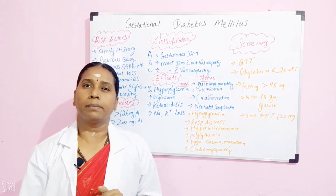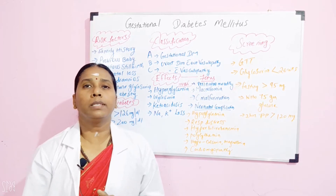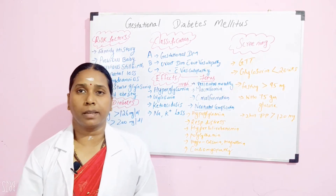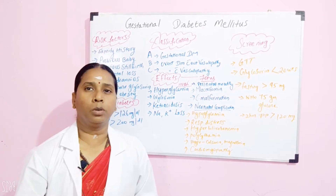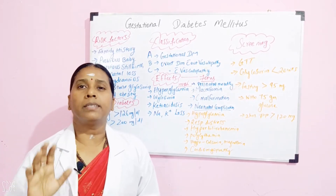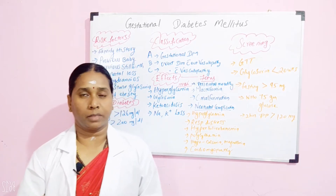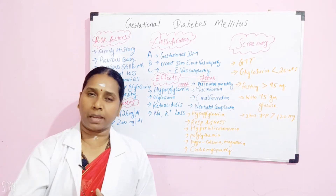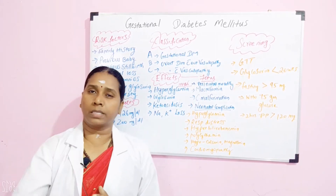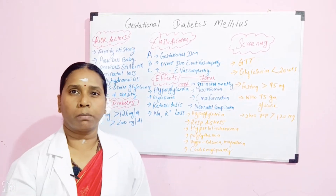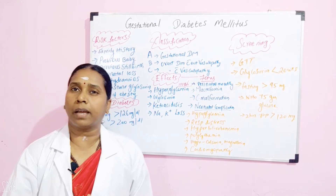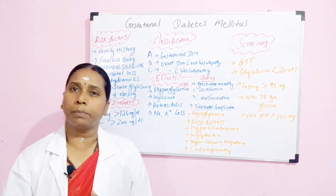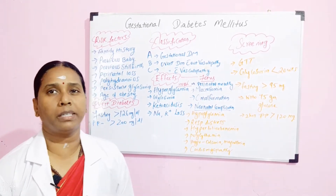Hi viewers, welcome back. In today's video, we are going to discuss about gestational diabetes. Gestational diabetes mellitus is abnormal tolerance to glucose. Sometimes it is detected first time during pregnancy. When there is an abnormal glucose tolerance which is detected or presenting for the first time in the mother, you term it as gestational diabetes mellitus.